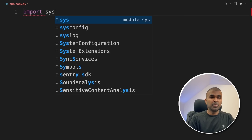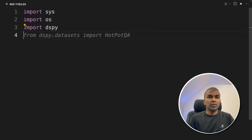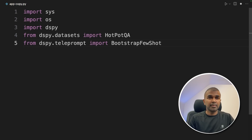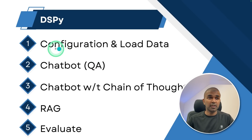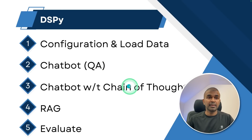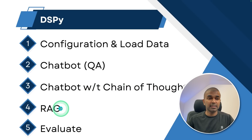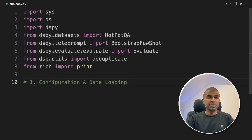Inside the file, import sys, os, dspy, hotpot QA dataset, bootstrap few shot, evaluate, deduplicate and print from rich. The steps we are going to do: first, configure and load data; then create a basic chatbot that is a question and answering system; then see how it compares when we add a chain of thoughts module; then implement RAG; and finally compare the performance of all of these. For configuration and data loading, we mention the model name — GPT-3.5 Turbo — then set the callbot v2 function and add those things to the settings.